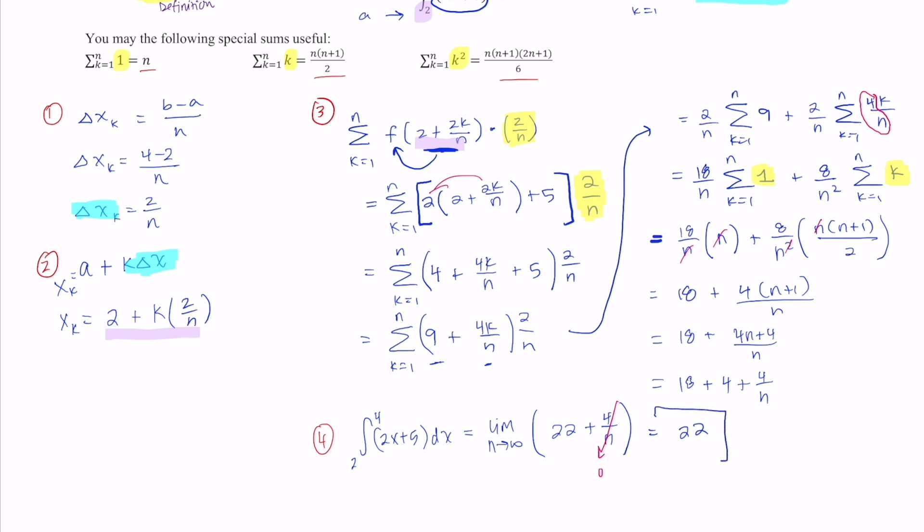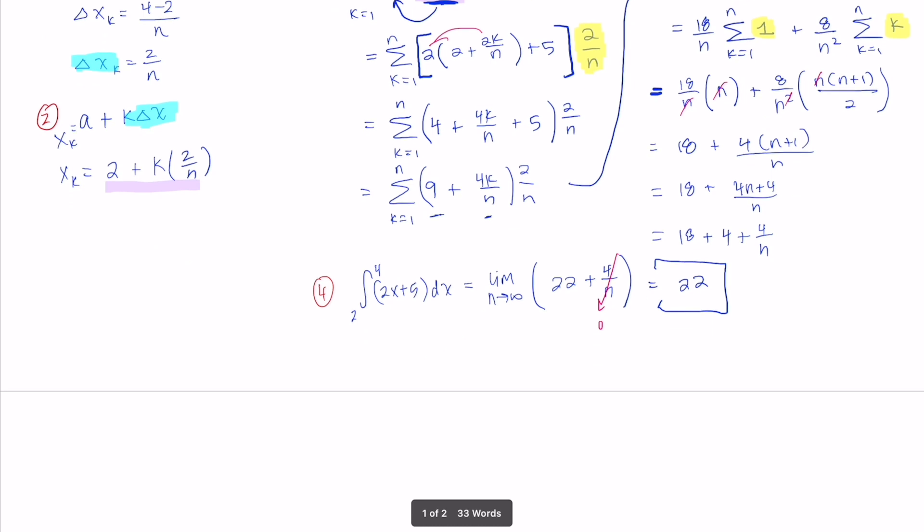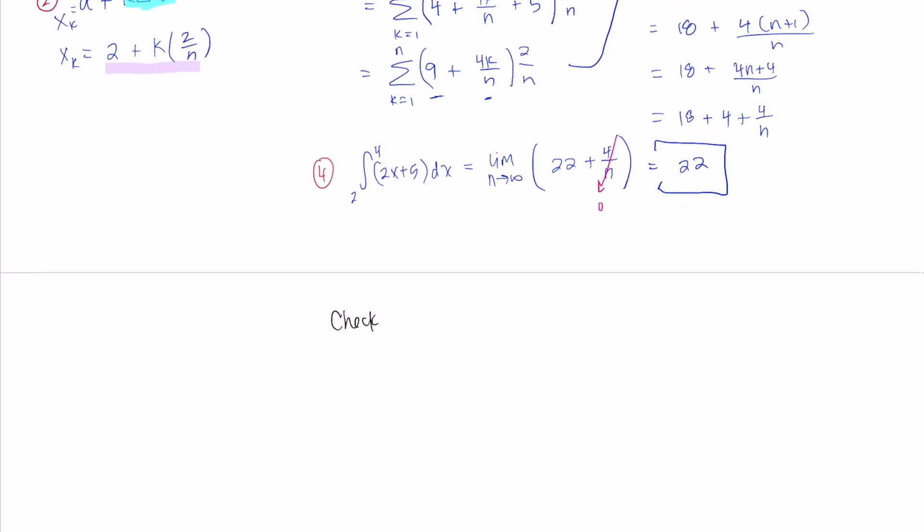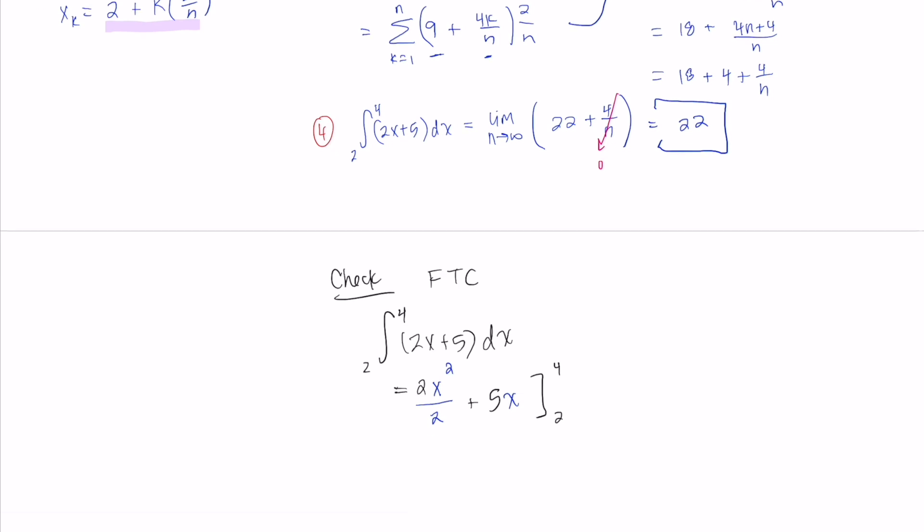And what would be a quick way to double check that this was correct? Using the fundamental theorem of calculus. So what is the integral, the definite integral of 2x plus 5 with respect to x? Well to integrate this we want to take the anti-derivative of 2x, so that would be, we would raise it up a power, divide by the power, and then 5, well raising that up a power would just be 5x. And then this is going to be evaluated from 2 to 4, and then continuing to simplify this, this is x squared plus 5x being evaluated from 2 to 4.